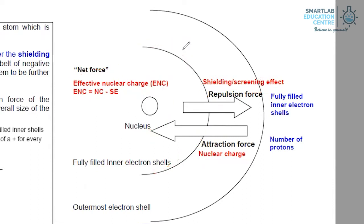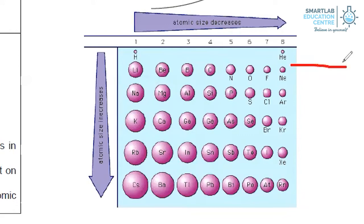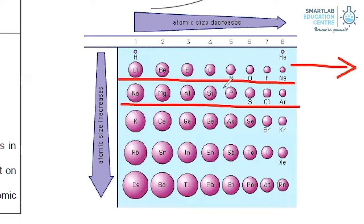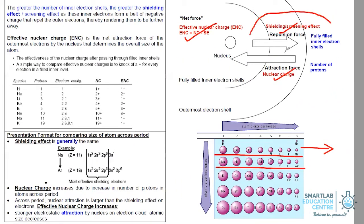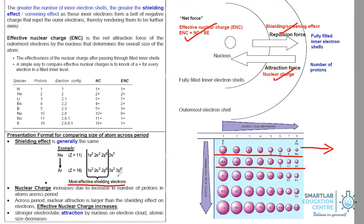Let me illustrate with an example how we use these three factors to explain how the atomic size of an atom decreases across the period. The first thing to do, in order to conclude whether the shielding effect increases or decreases, is to always write the electronic configuration. That is the correct presentation technique. More importantly, highlight that the electrons in the fully filled inner electron shells are the most effective in providing shielding. For example, sodium, which is a period three element, has its outermost electron in the third electron shell.